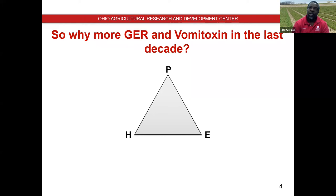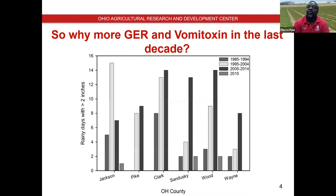Over a four-year period, one of my graduate students collected over 600 samples and took a closer look at the pathogen population. What we found is that the fungus that causes Gibberella ear rot — the pathogen population — hasn't changed considerably. The chemotype present in Ohio is still the same as 15 years ago, so there's been no change in the vomitoxin-producing ability of the fungus. Weather is probably the single most important driver of higher levels of Gibberella ear rot and vomitoxin over the last 10 to 15 years.